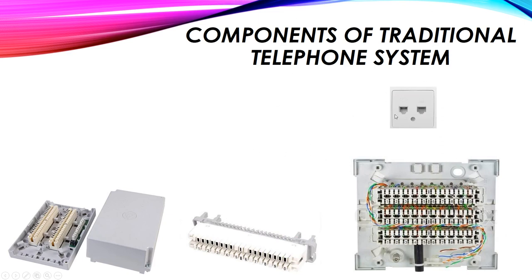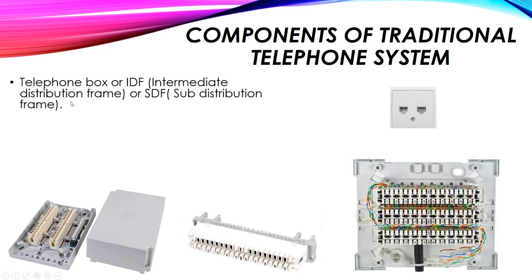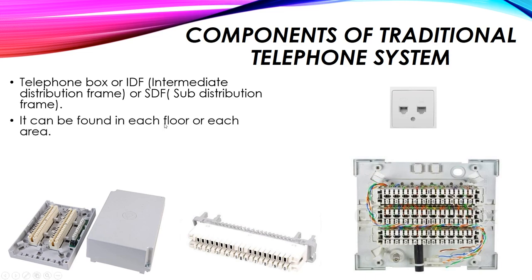The RJ11 outlet is connected to the Sub Distribution Frame, also called the SDF, the telephone box, or the IDF — Intermediate Distribution Frame. The SDF supplies the signal to each RJ11 outlet and is used for collecting and arranging all telephone lines on a floor or in a specific area. It can be found on each floor or in each area, with each RJ11 representing one telephone line — for example, RJ11 number one for telephone one, number two for telephone two in another room, and so on.